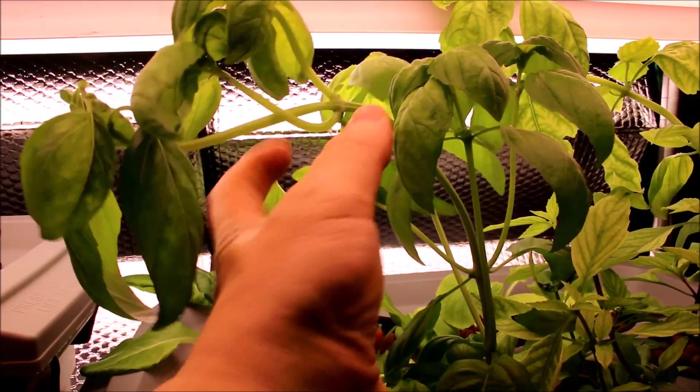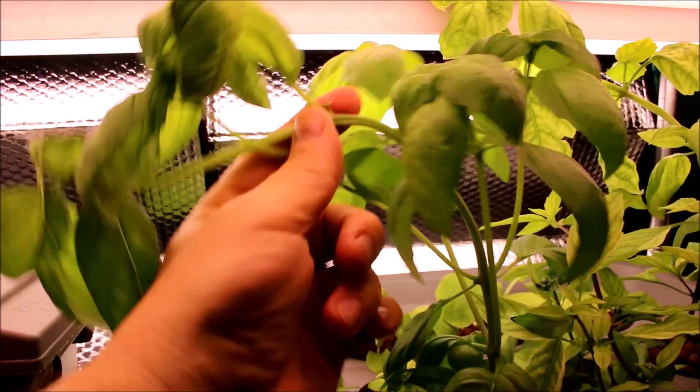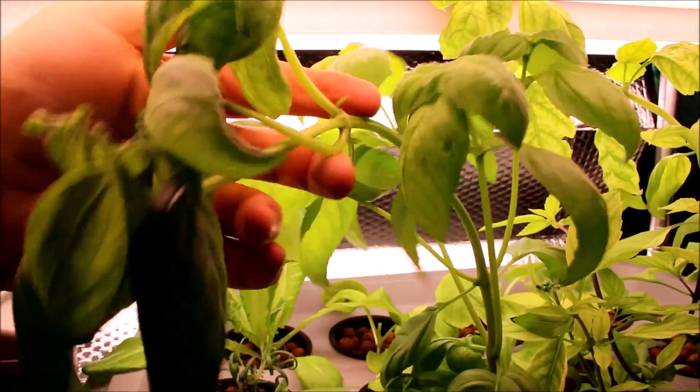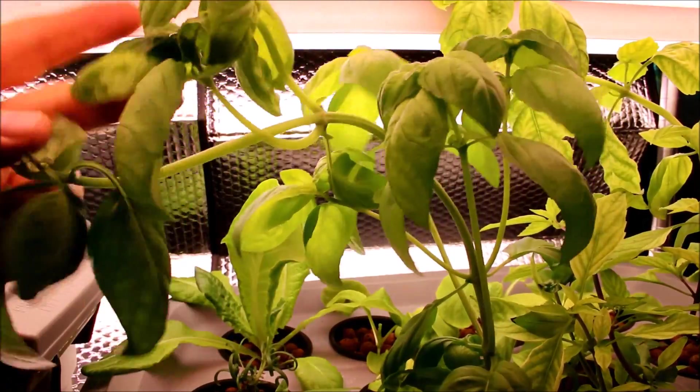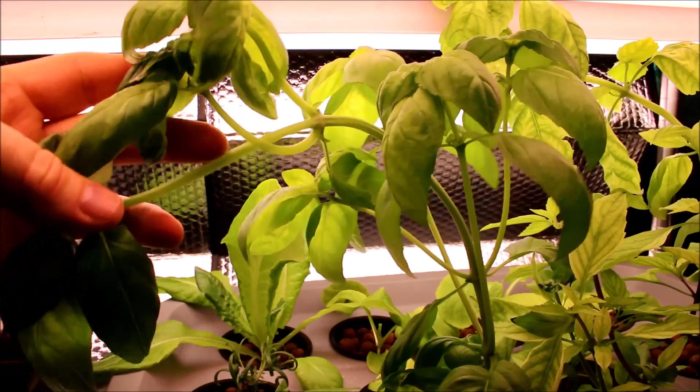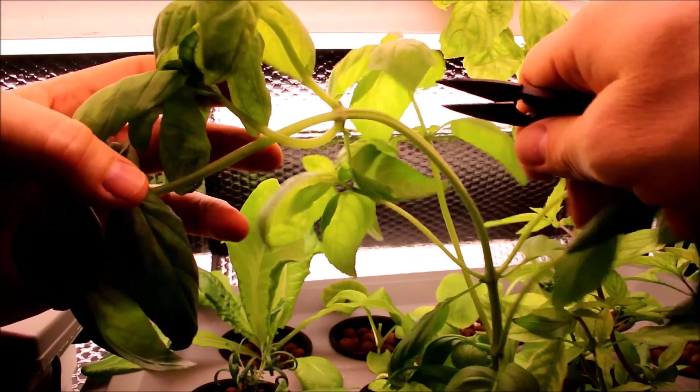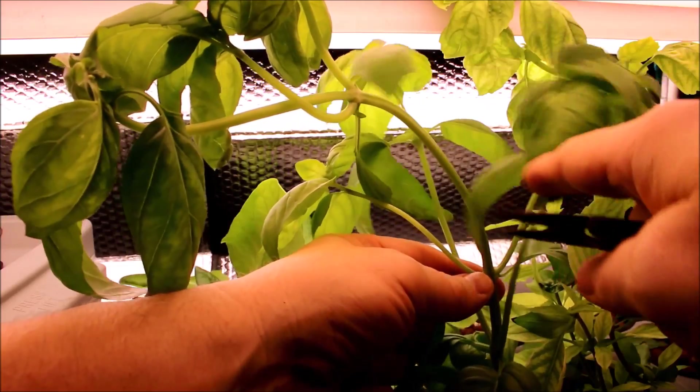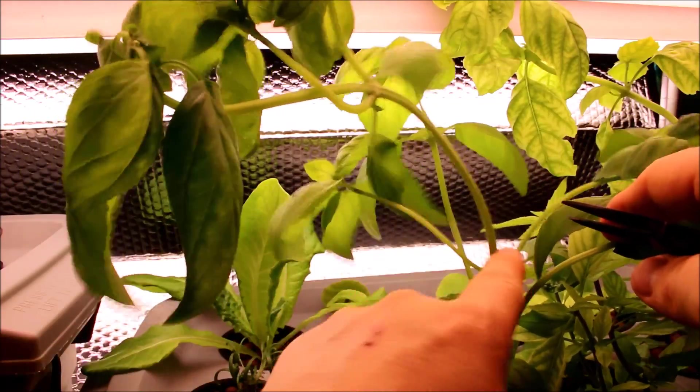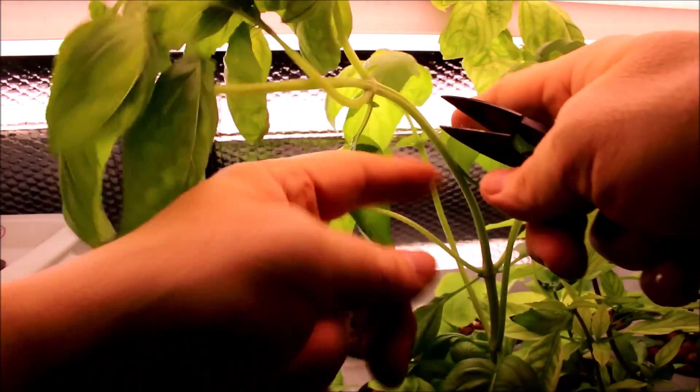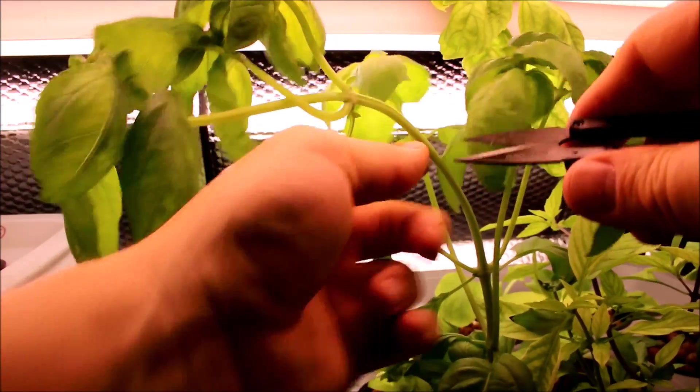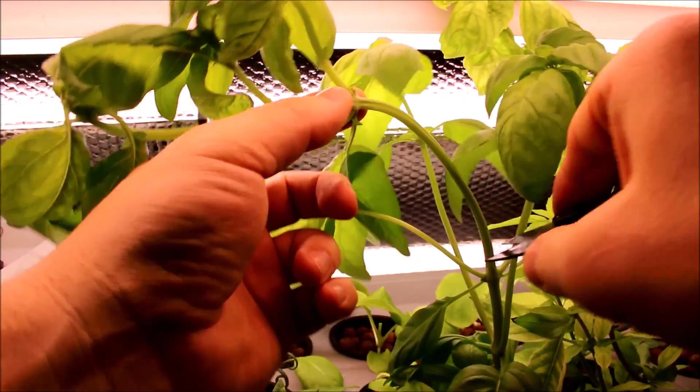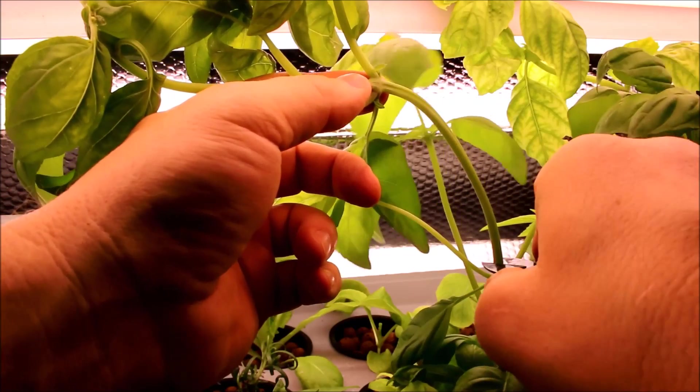A good candidate for pruning will be this branch here. It's really starting to go quite long and it's overgrowing this system. So what I'm going to cut is you can see down here we've got some nice branching occurring and I would like to have this starting to grow to split off and reduce the height a bit. So I'm going to be taking this off right here.